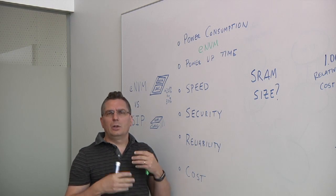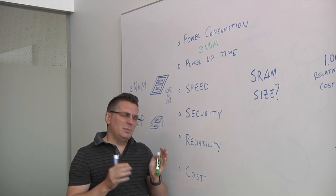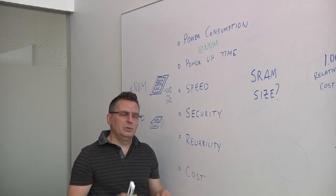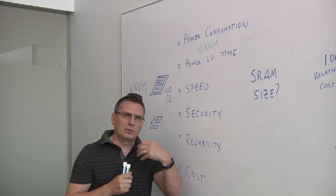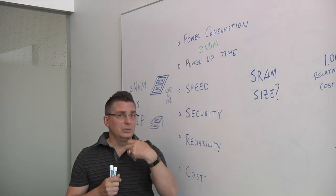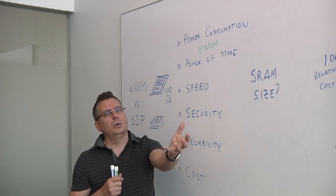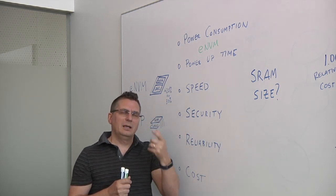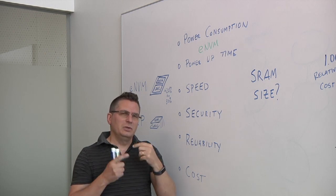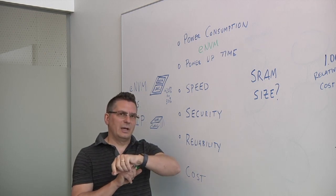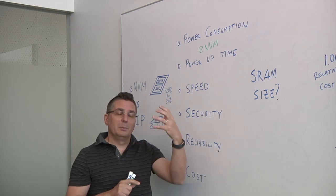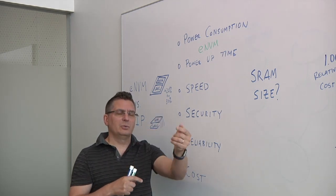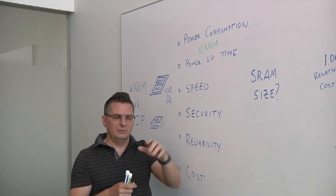So power up time is another consideration. If you can tolerate a longer power up time, then maybe the system in a package with NOR flash is okay for you because in that case you have to wake up, you have to go fetch code from the flash externally using that higher power IO. Then you have to pull the data in into your SRAM, local SRAM, and execute out of it. So now you can see why for a fitness tracker, why embedded NVM is superior because it sits right there in the chip. We don't have to go fetch it. We can actually execute directly out of the embedded NVM.